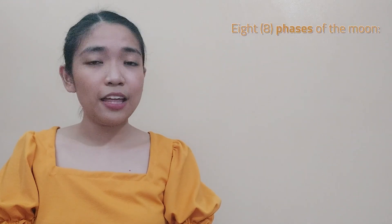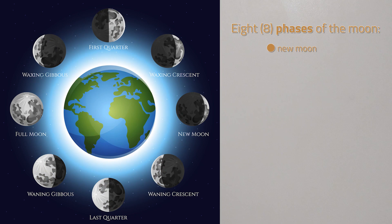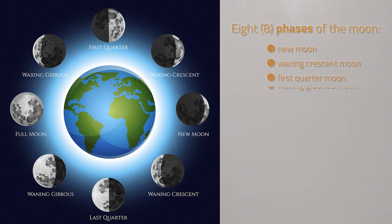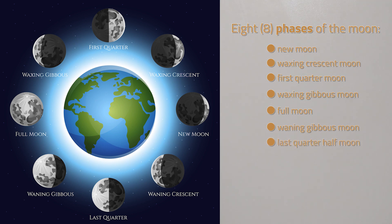There are eight faces of the moon. These are new moon, waxing crescent moon, first quarter moon, waxing gibbous moon, full moon, waning gibbous moon, last quarter half moon, and waning crescent moon.